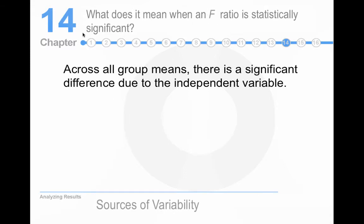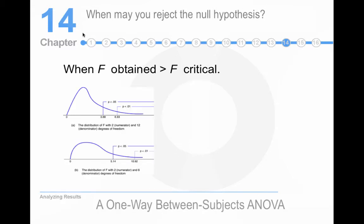What does it mean when the f-ratio is statistically significant? Well, across all the group means there's a significant difference due to the independent variable. That would be nice to find. When can you reject the null hypothesis? Like in the chi-square and the t, when the f-obtained is greater or equal to the f-critical, we reject the null hypothesis. Conversely, when the f-obtained is less than the f-critical, we fail to reject the null hypothesis.